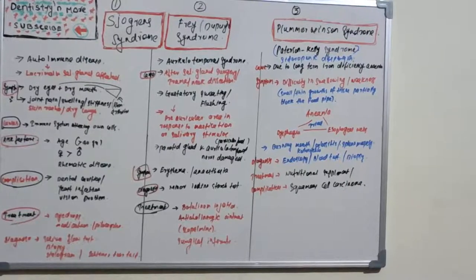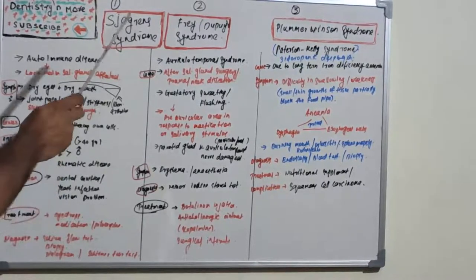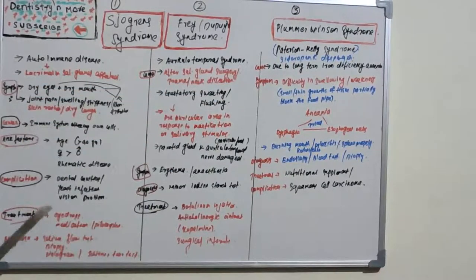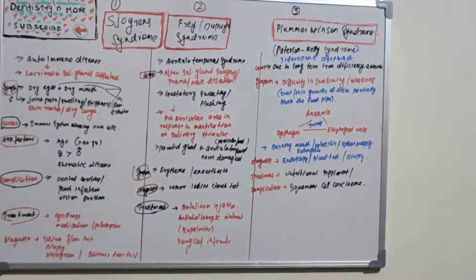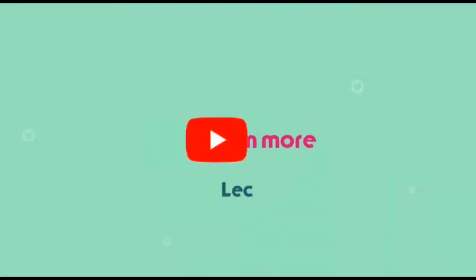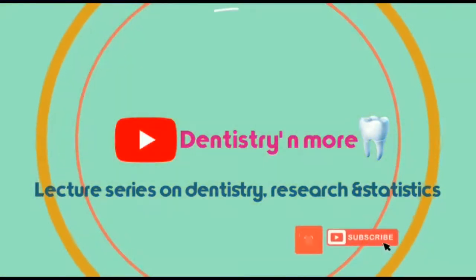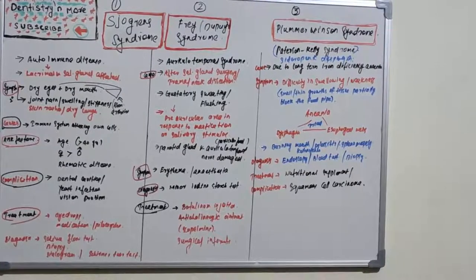Welcome back to a new session on dentistry and more, specifically oral pathology. Today's session will be dealing with three syndromes: Sjögren's syndrome, Frey's syndrome, and Plummer-Vinson syndrome. We have many syndromes in oral pathology, and this session highlights three of them; coming sessions will deal with further syndromes.